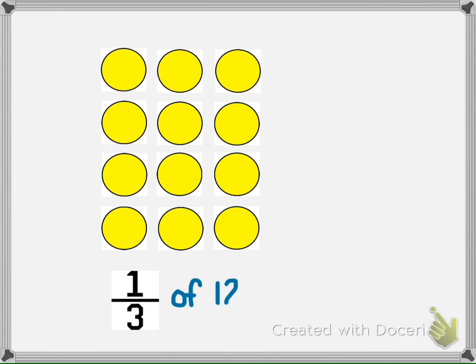So, every third button could receive a mark. Finally, we would count the total number of buttons that were marked and find that the value of one-third of the group is equal to four.